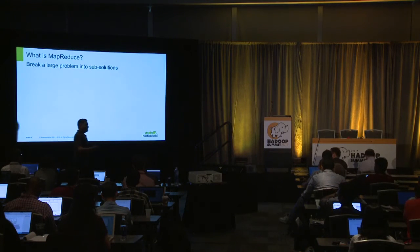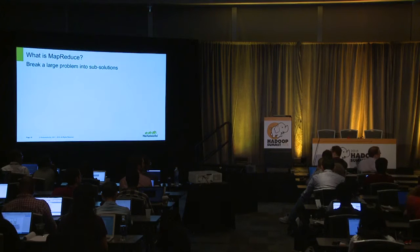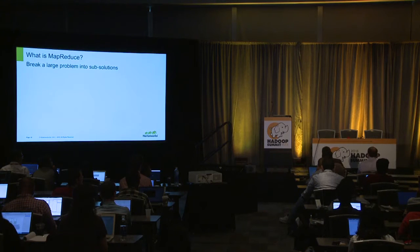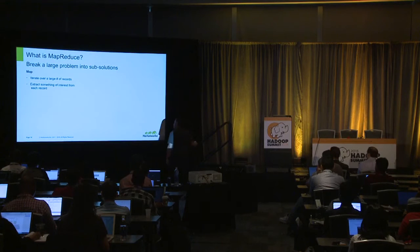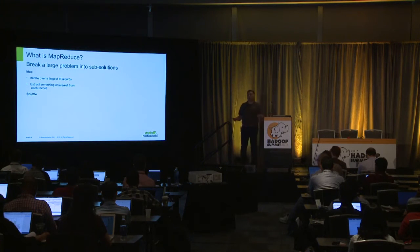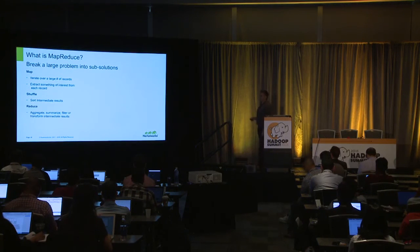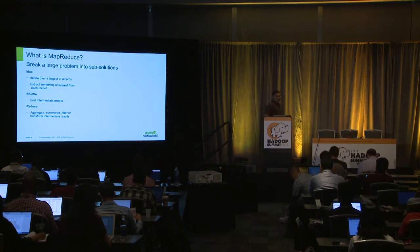So I want to iterate over a large number of records, extract something interesting — in our example, count nickels. There's a shuffle phase: I do that processing, then I need to bring the subsets of data, the results, together. I sort intermediate results, and then I do the reduce — the aggregation — summarization, filter, and transformation on those intermediate results. I have a bunch of data, I want to do some processing, I move my processing to my data, do the processing, do a shuffle, and then do the reduce, and get my output.